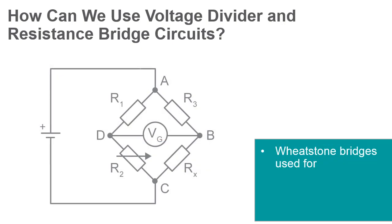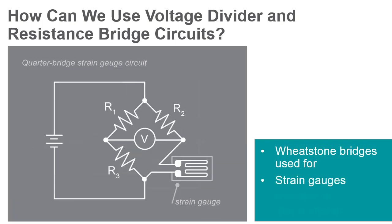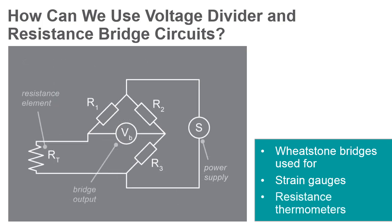A Wheatstone bridge is ideal for measuring small changes in resistance and is often used in applications such as strain gauges and resistance thermometers. One of the Wheatstone bridge's initial uses was for the purpose of soil analysis and comparison, and they continue to be used in many forms of analysis circuitry.